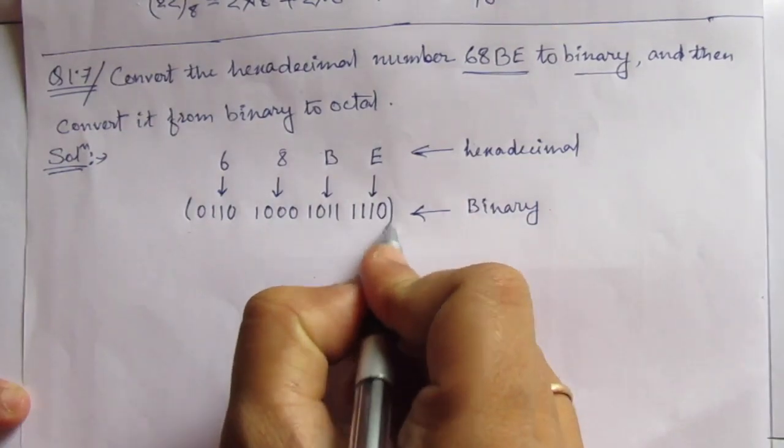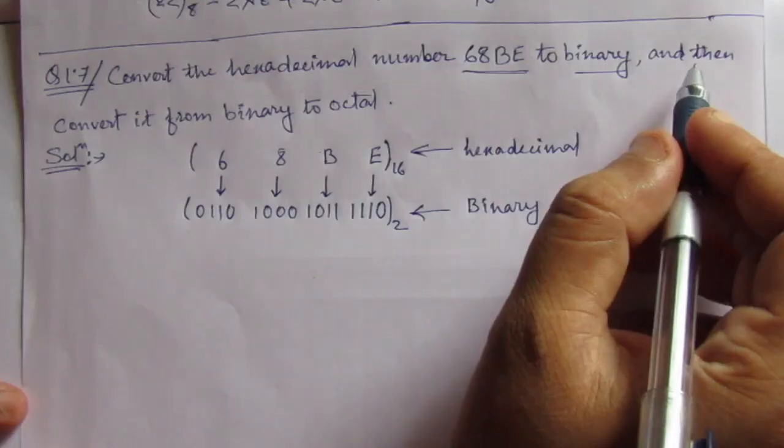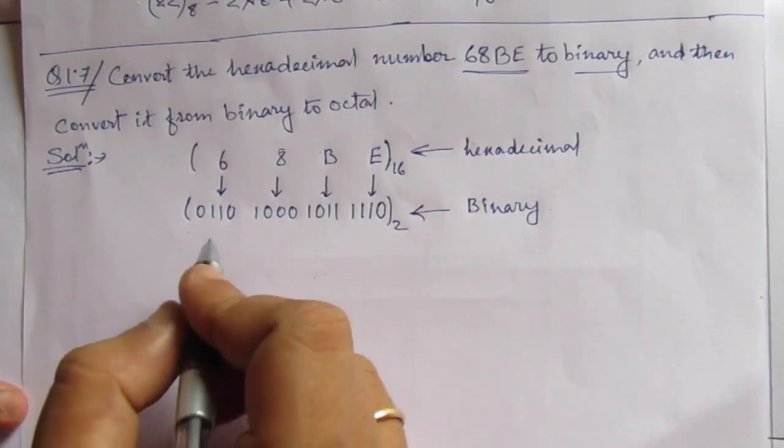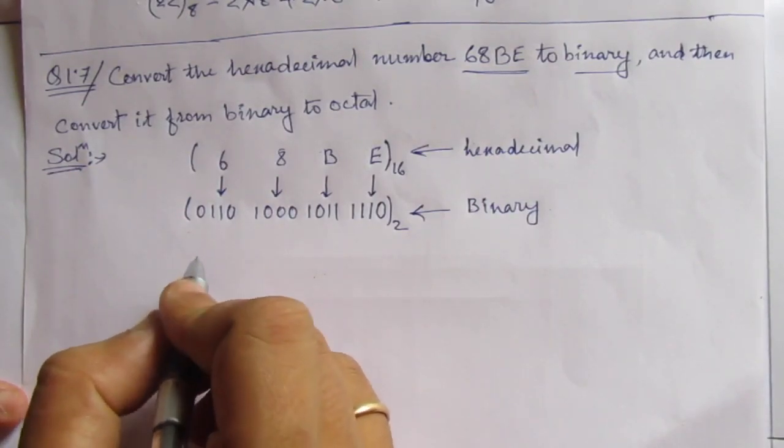Then convert it from binary to octal. So let us rewrite this binary number.